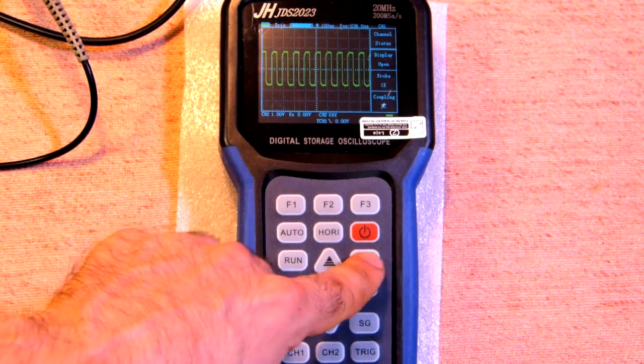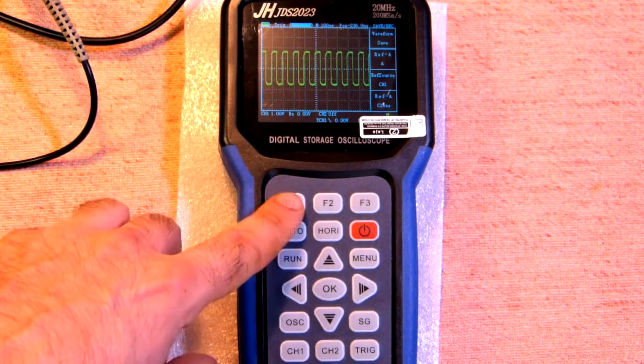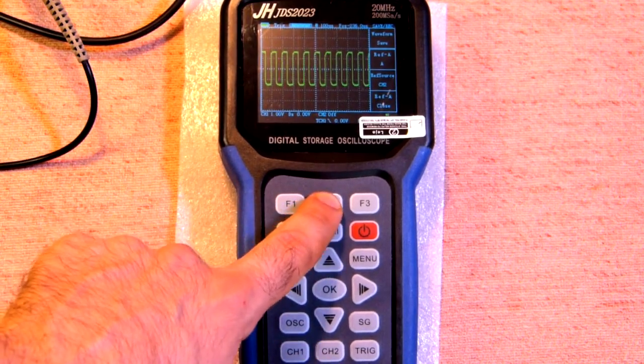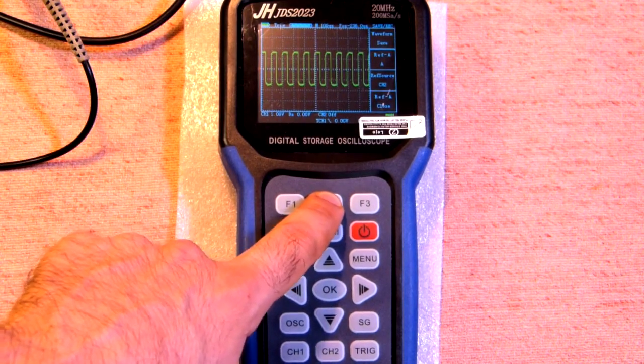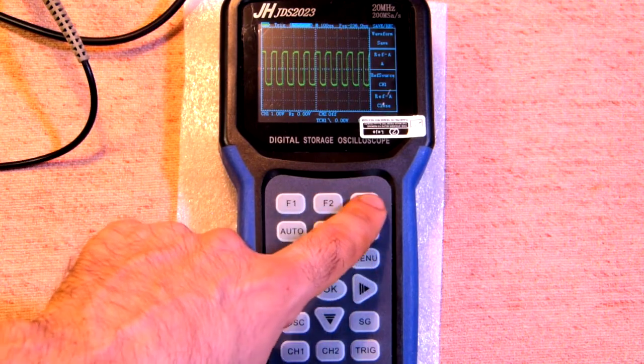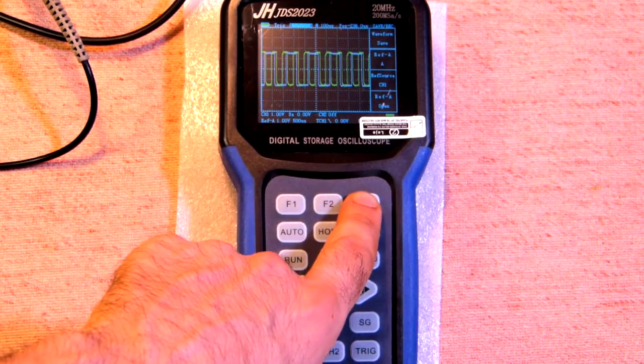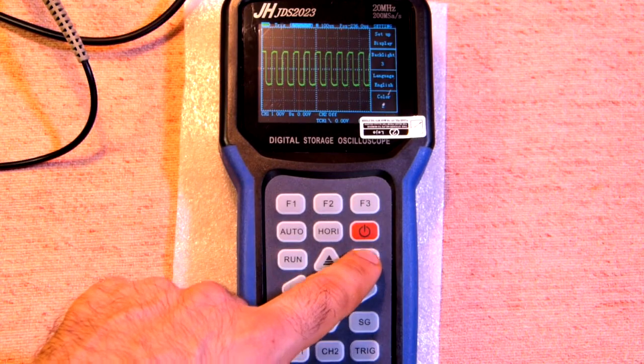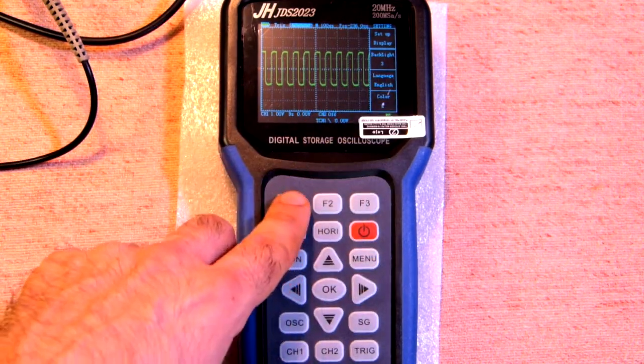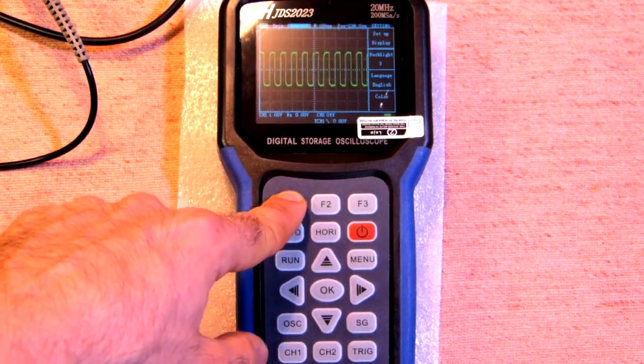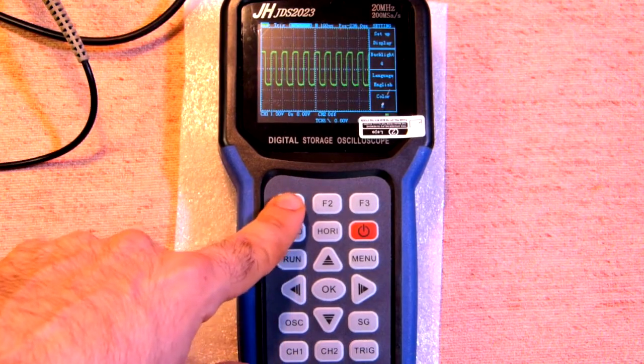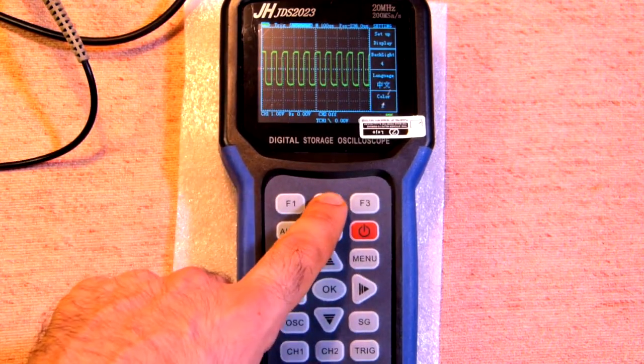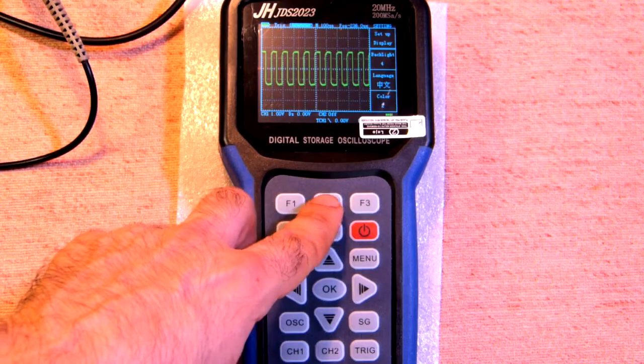As to the menu button. Here we have waveform save. So the function one is Ref A, Ref B. The F2 is source: channel 1, channel 2. Ref A is close, close and open. Also on second press, set up display. This is backlight. Six values. Language English or Chinese only. So it's Chinese and you should restart this device. Now this is English.